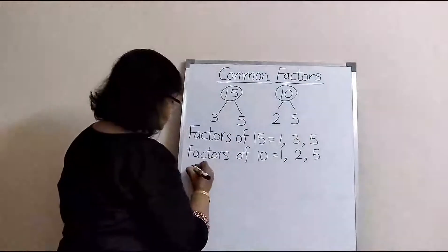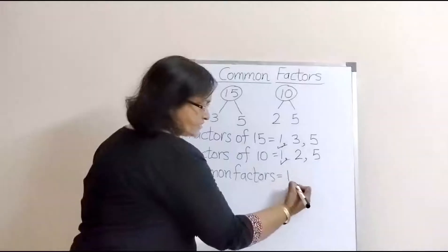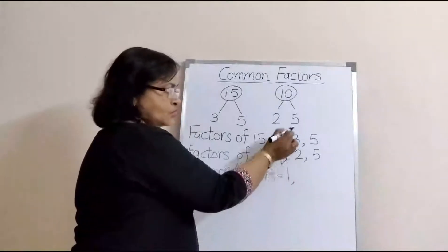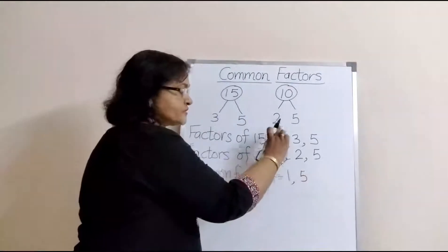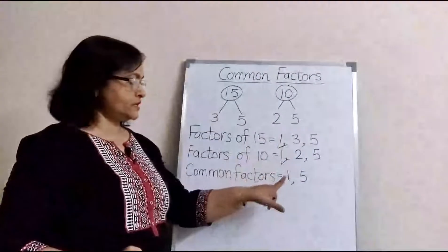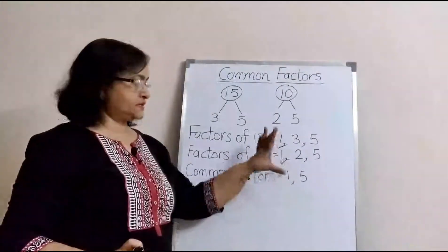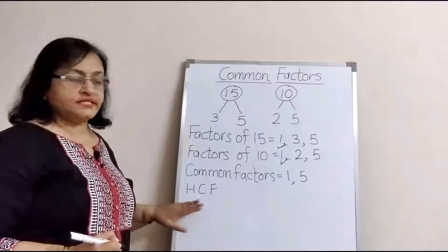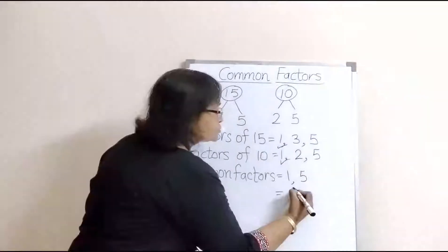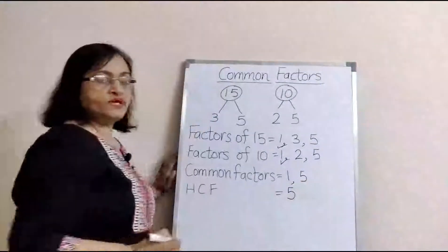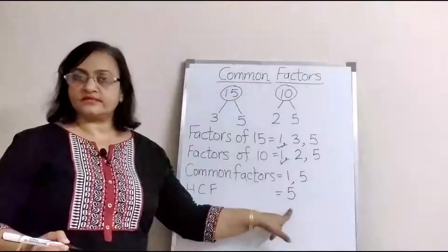Now let's see the common factors. 1 is in both, so we write 1. 3 and 2 are not common. 5 is in both, so we write 5. The common factors are 1 and 5. The highest among these is 5, so 5 is our highest common factor.